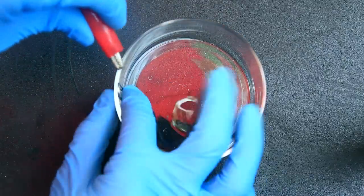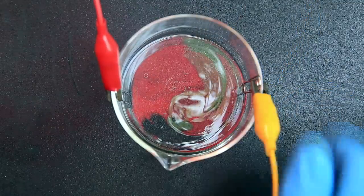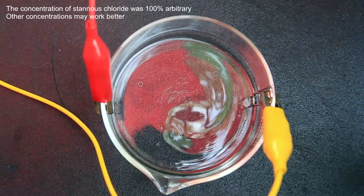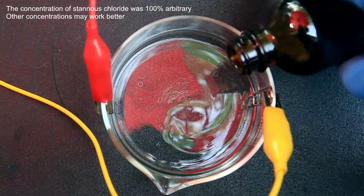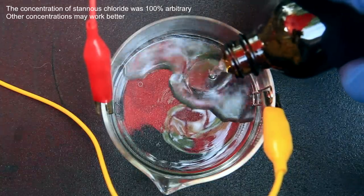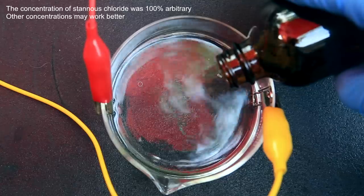Each of the paper clips will serve as an electrode and they're clamped to either side of the dish using the alligator clips. The dish is then filled with a few milliliters of 2 molar stannous chloride solution which I made in a previous video. I'll provide a link to the stannous chloride video in the description.